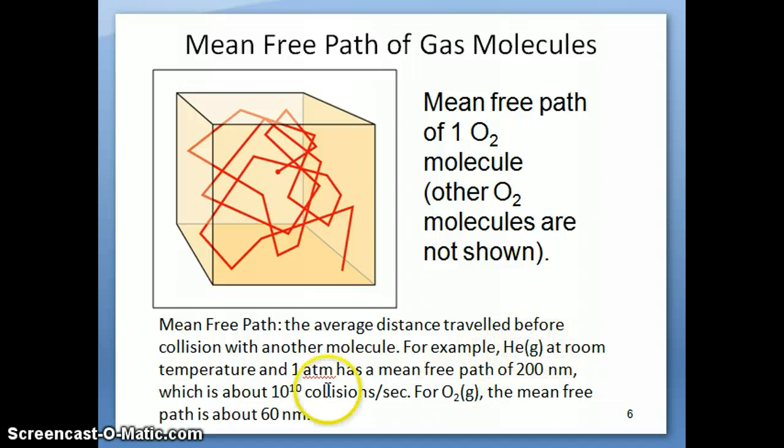For example, something like helium gas at room temperature in one atmosphere, the mean free path is about 200 nanometers. That's pretty short distance, right? That corresponds to about 10 to the 10th collisions per second. Every second, basically, the helium gas particle will hit other gas particles about 10 to the 10th times. There's a lot of collisions that are happening every second.